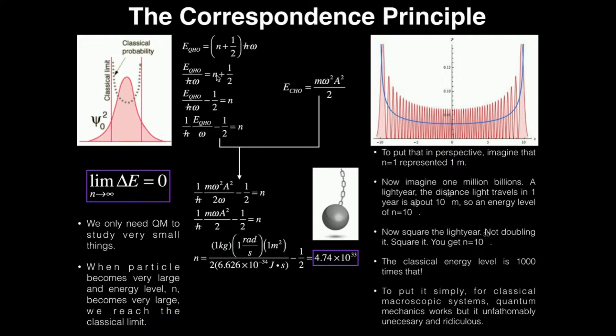Let's solve this for n. I'm going to divide both sides by h-bar omega, so the quantum harmonic oscillator energy divided by h-bar omega equals n plus a half. Subtract one-half to the other side, so the quantum energy divided by h-bar omega minus a half equals the energy level n. I'm going to factor out the h-bar, so one over h-bar times the quantum energy over omega minus a half equals n.